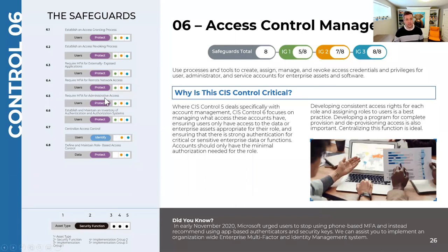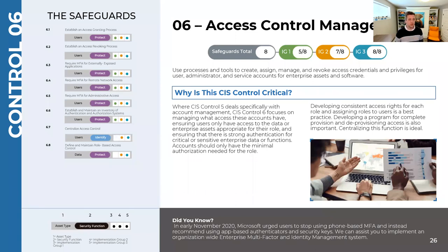6.5 is a challenging one to implement — it requires multi-factor for administrative access. The reality is that not every on-premise solution has multi-factor built in; it's primarily been a web application solution. So this is a best-efforts kind of implementation. Then 6.6 is having an inventory of authentication and authorization systems. You don't want a whole bunch of people using different platforms you can't control.